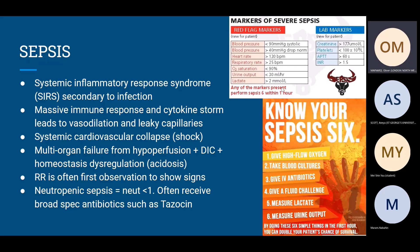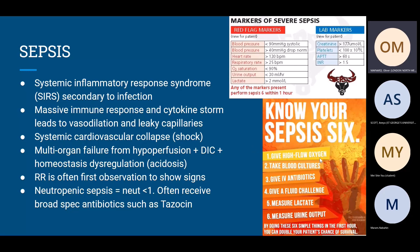Neutropenic sepsis is a subcategory: neutrophils below 1 × 10⁹/L leaves patients highly vulnerable to bacterial infection, so broad-spectrum antibiotics like Tazocin are given prophylactically. The Sepsis Six is the treatment bundle — three in, three out. Three things out of the patient include blood cultures to identify the organism.